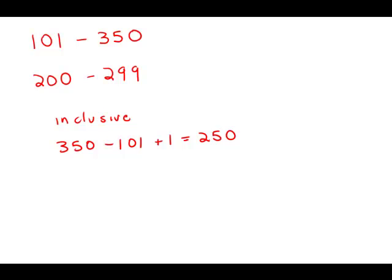Now we need to know how many of them have a hundreds digit of 2. Well, these are all the tickets from 200 to 299. Again, inclusive counting. And this is exactly 100 tickets.